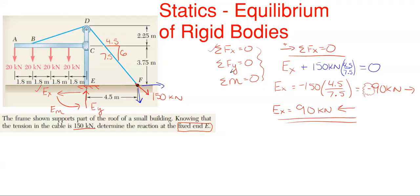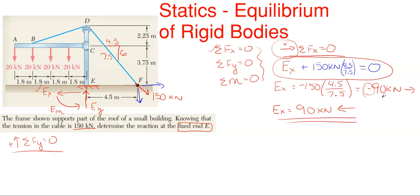Next, let's sum forces in the y direction. Taking upward as positive, everything upward is positive and everything downward is negative. Important note: the positive convention here only assigns plus or minus signs within the equation. When a negative answer pops out at the end, it means you assumed the wrong direction — don't conflate those two things.